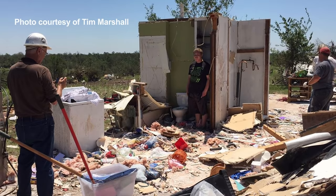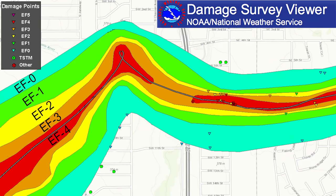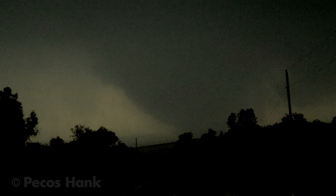After a tornado occurs, various locations of assessed damage are given EF ratings. The entire tornado earns its most severe rating, even if that intensity is only a tiny fraction of the damage swath.